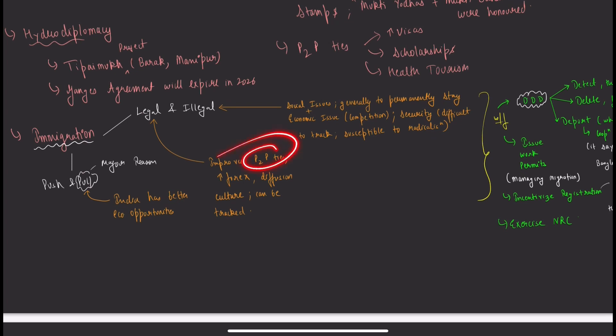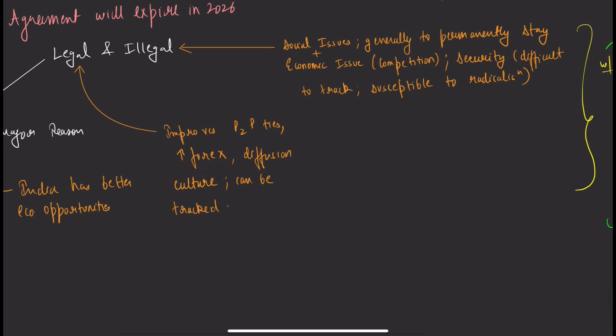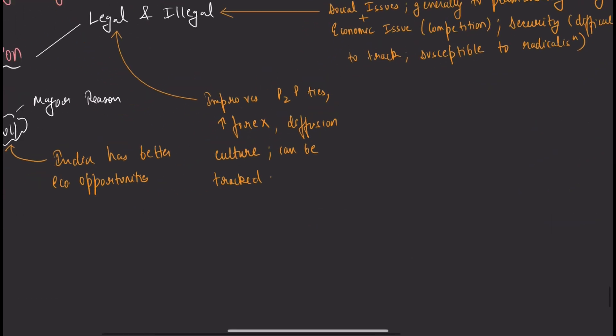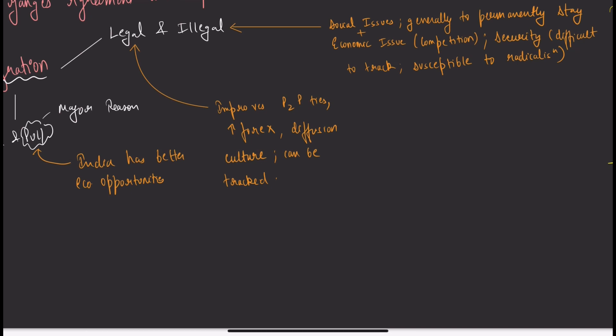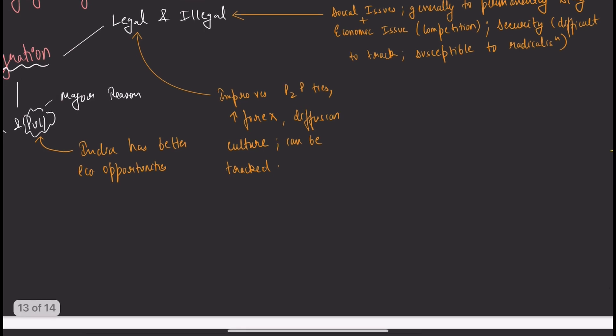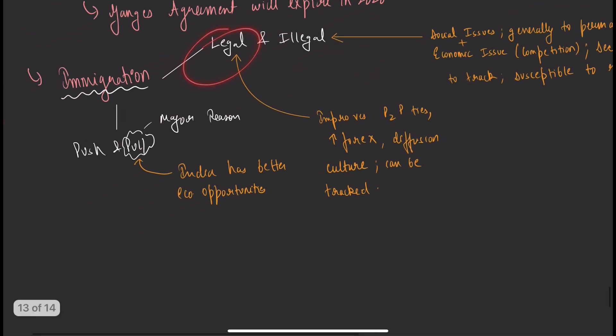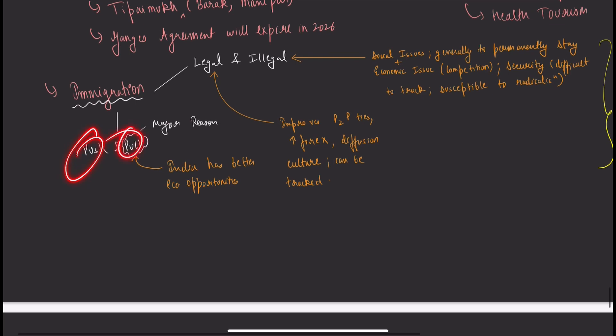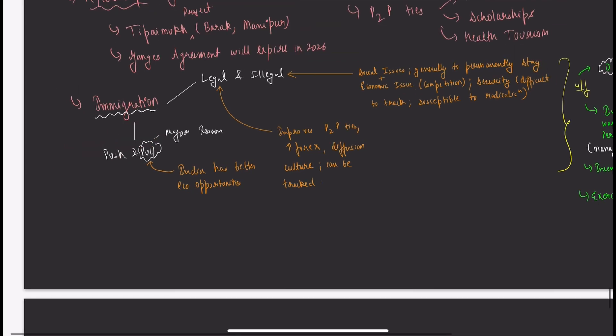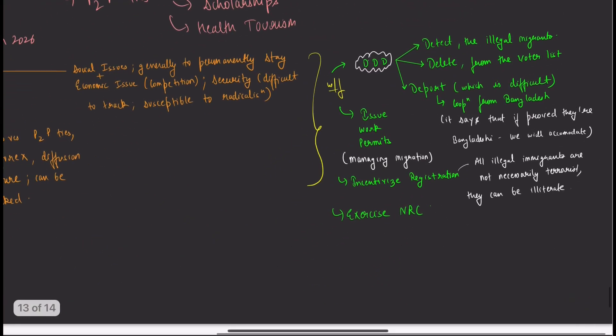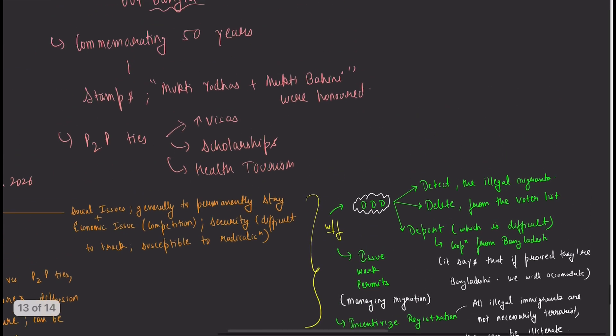Legal immigration is good—increases people-to-people ties and forex, though Bangladeshi currency has less value than Indian rupee. Diffusion of culture can be tracked with legal immigration. Push and pull factors drive immigration. India has better economic opportunities, attracting people from Myanmar and Bangladesh.